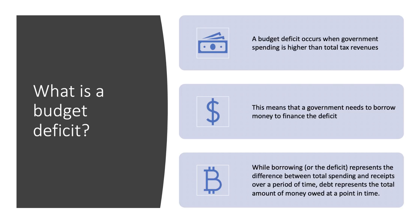This means that the government needs to borrow money — for example through the issue of government bonds — to finance the deficit. There's a difference between deficit and debt: the deficit is the difference between total spending and money coming in, while the national debt is the total amount of money the government owes at a point in time.